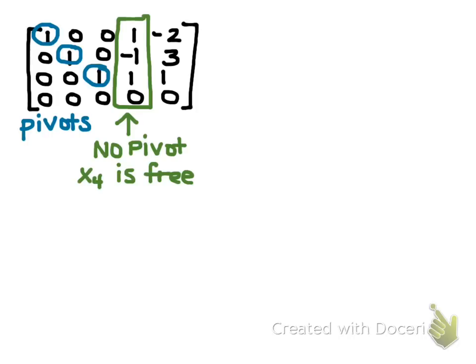Now, I can see that in columns 1, 2, and 3, I have pivots. And in column 4, I have no pivot. I have no leading entry. And so x4 is going to be my free variable. Now remember, column 1 is representing the x1 column. Column 2 is x2, x3, and x4. And then the negative 2, 3, 1, 0 is my solution column.